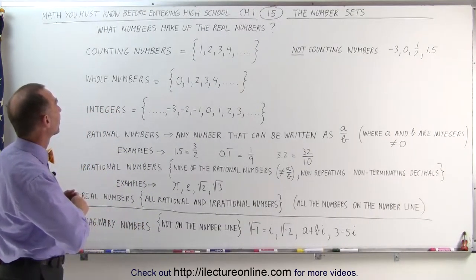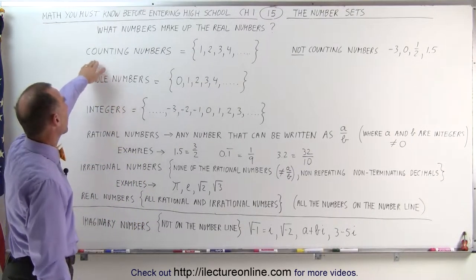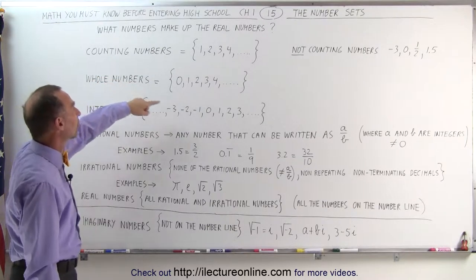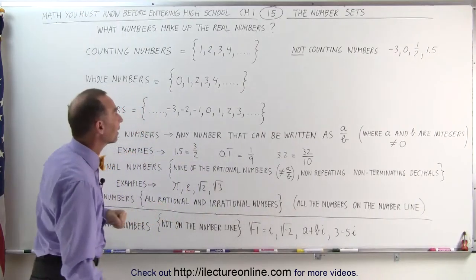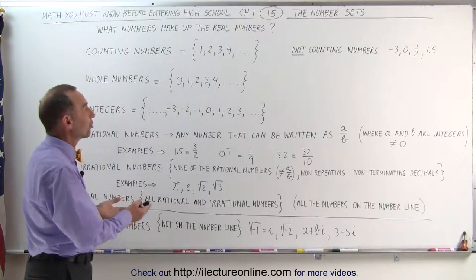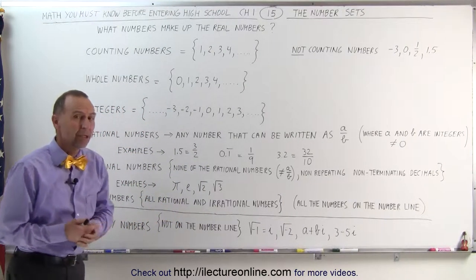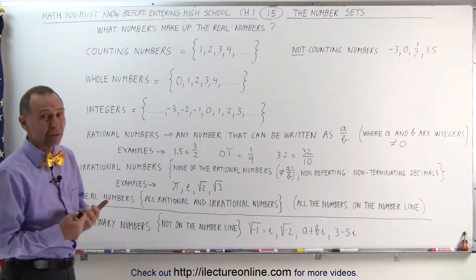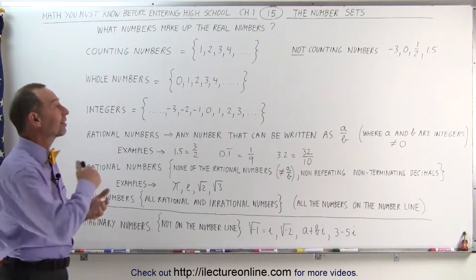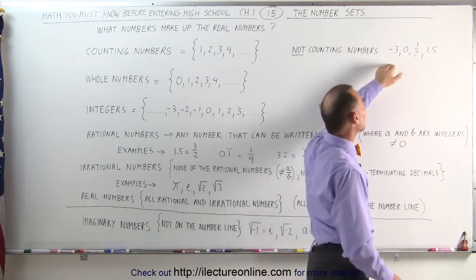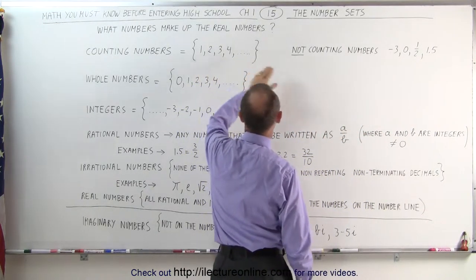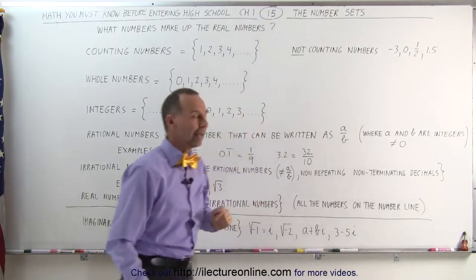So what are the different number sets? First of all, the counting numbers. Those are the numbers starting with 1 and continuing on: 2, 3, 4, 5, all the way up to infinity. They're simply counting numbers starting with the number 1. Not counting numbers — sometimes it's better to understand what are not counting numbers. For example, negative 3, the number 0, the fraction 1/2, the decimal 1.5 — those are not counting numbers. It has to be a number like 1, 2, 3, 4 and nothing less than that.